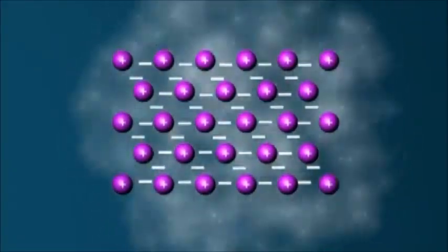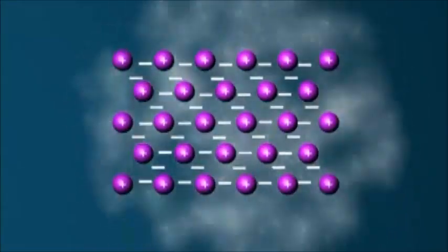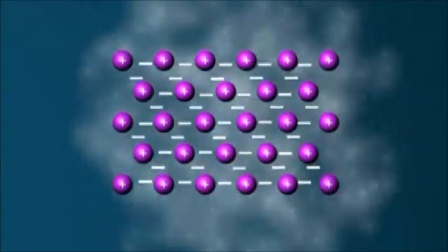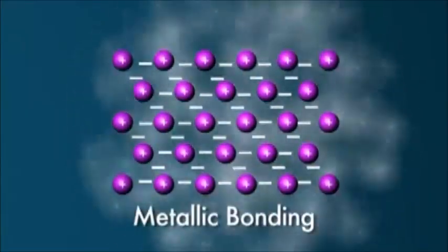The structure is held together by the strong electrostatic force between the sea of valence electrons and the metal cations. This is called metallic bonding.